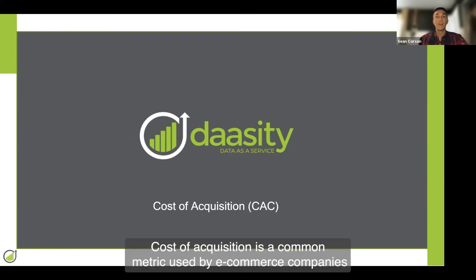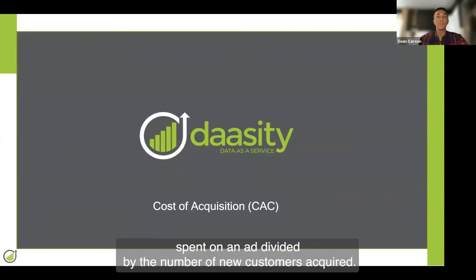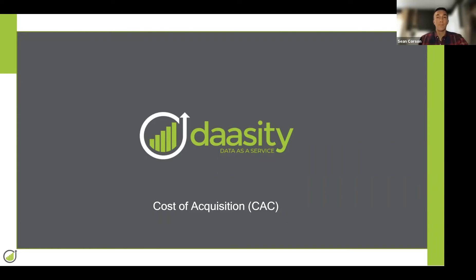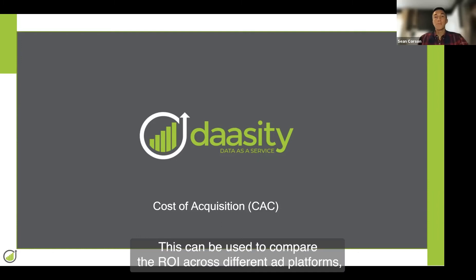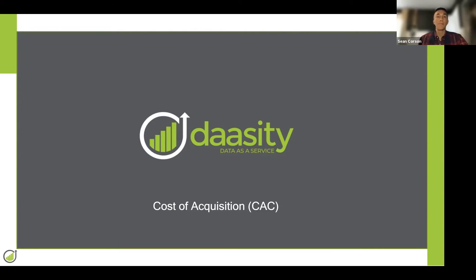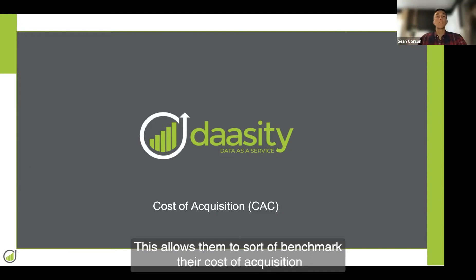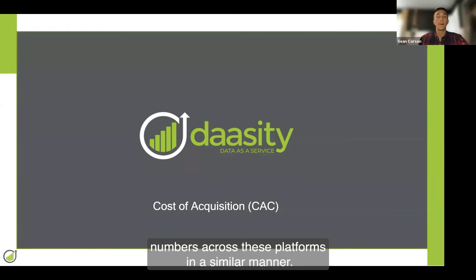Cost of acquisition is a common metric used by e-commerce companies to understand the return that they're getting on their ad spend. The simple math is just the total amount spent on an ad divided by the number of new customers acquired. This can be used to compare the ROI across different ad platforms. E-commerce companies, as they grow, might be spending advertising dollars on upwards of a dozen different ad platforms, and this allows them to benchmark their cost of acquisition numbers across these platforms in a similar manner.